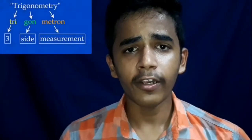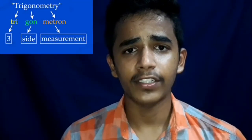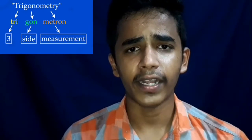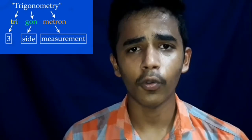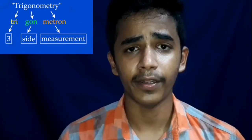What is Trigonometry? Trigonometry is a branch of mathematics which tells the relationship between sides and angles of a triangle. The word Trigonometry is derived from the Greek language: tri, gono, metron. Tri means three, gono means sides, and metron means measurement.